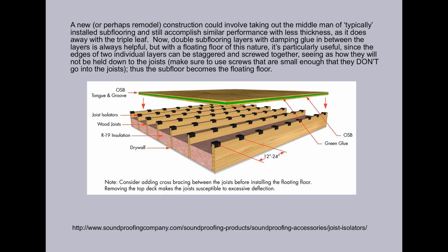A new or perhaps remodel construction could involve taking out the middleman of typically installed subflooring and still accomplish similar performance with less thickness, as it does away with the triple leaf. Now, double subflooring layers with damping glue in between the layers is always helpful, but with a floating floor of this nature, it's particularly useful since the edges of two individual layers can be staggered and screwed together, seeing as how they will not be held down to the joists. Make sure to use screws that are small enough that they don't go into the joists. Thus, the subfloor becomes the floating floor.